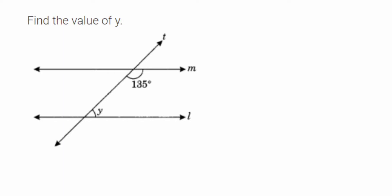Hey everyone, here's a question from lines and angles. The question is: find the value of Y. This is the figure given to us. L and M are parallel lines, and T is a transversal. They have given two values here: the first one is this angle, 135 degrees, and the other is Y, which we have to find out.